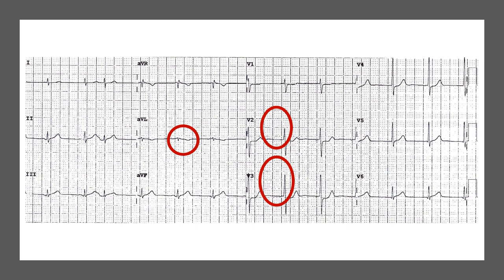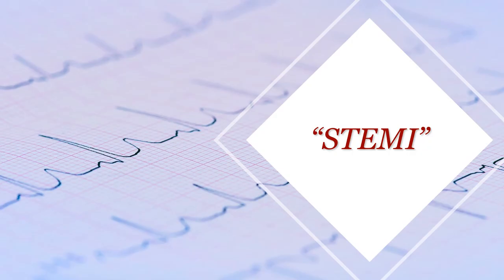We've got T wave inversion in AVL and we've got ST depression in leads V2 and V3. In the presence of chest pain, that should concern you about ongoing ischemia. I'm going to leave this case at this stage and start talking about the important topic of STEMI.